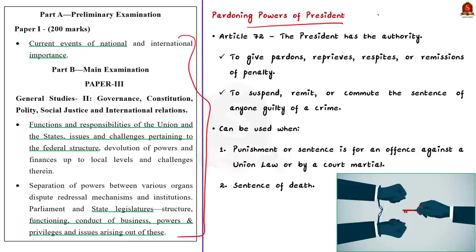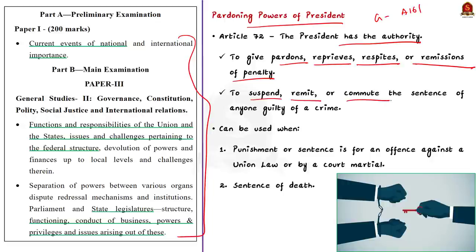As per Article 72, the President has the authority to give pardons, reprives, respites or remissions of penalty. The President also has the authority to suspend a sentence or remit or commute the sentence of anyone guilty of a crime. The President can use pardoning powers when a person has been tried and convicted in three scenarios: when punishment is for an offense against a union law; when punishment is by a court-martial; and when the sentence is a death penalty. These pardoning powers of the President are independent of judiciary — it is an executive power. The purpose is to correct any judicial errors and to afford relief from a sentence regarded as unduly harsh.